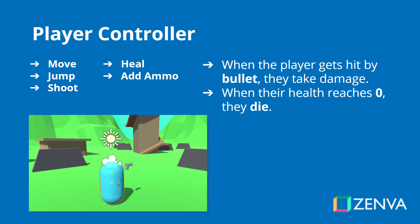One of the first things we will create is the player controller. This is what you will control. You will be able to move, jump, shoot, heal when you pick up a health pack and add ammo when you pick up an ammo pack. When a player gets hit by a bullet, they take damage and when their health reaches zero, they will die. The camera will become a spectator camera, so you will then be able to fly around the map and look at the remaining players while they play the game.